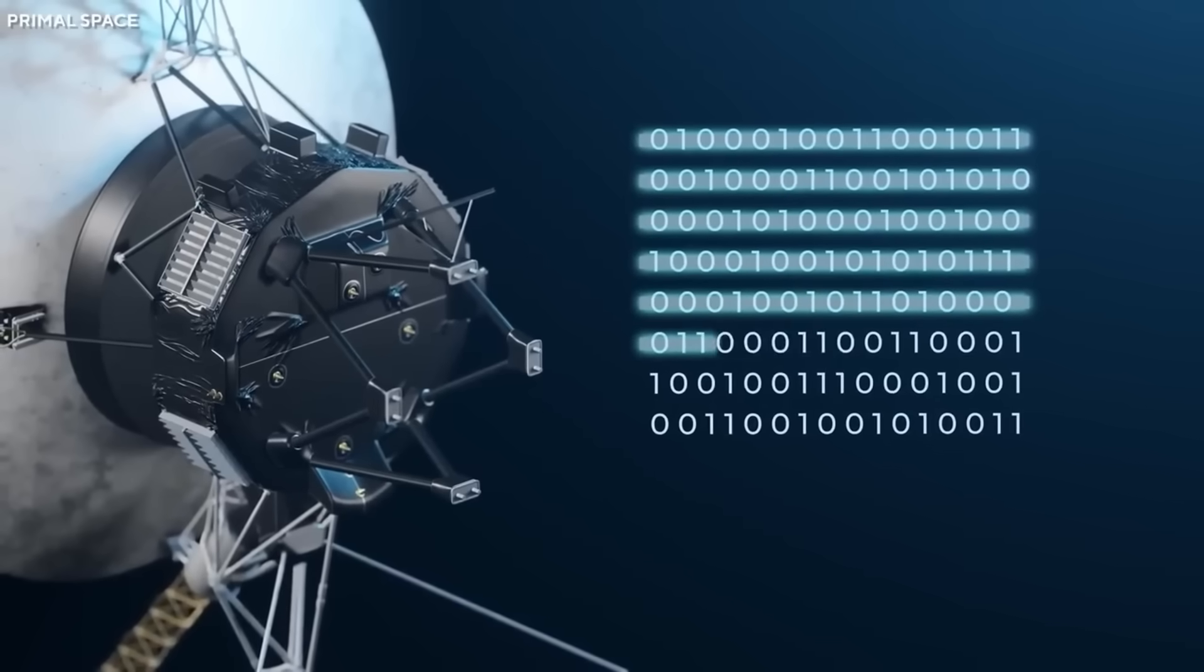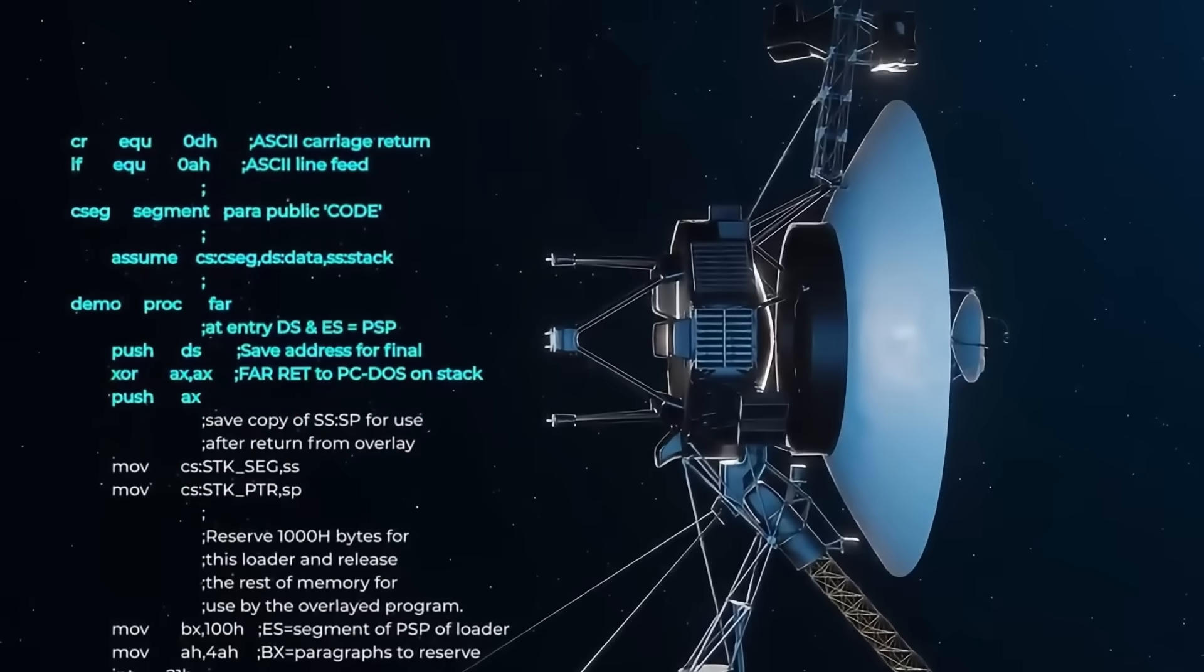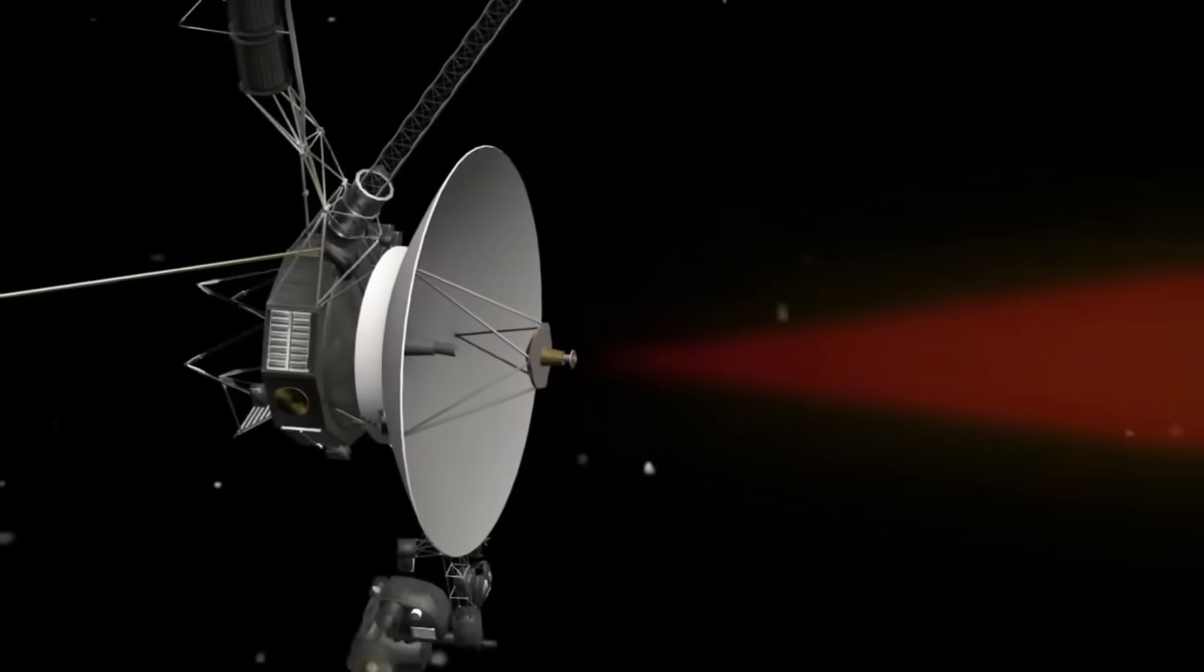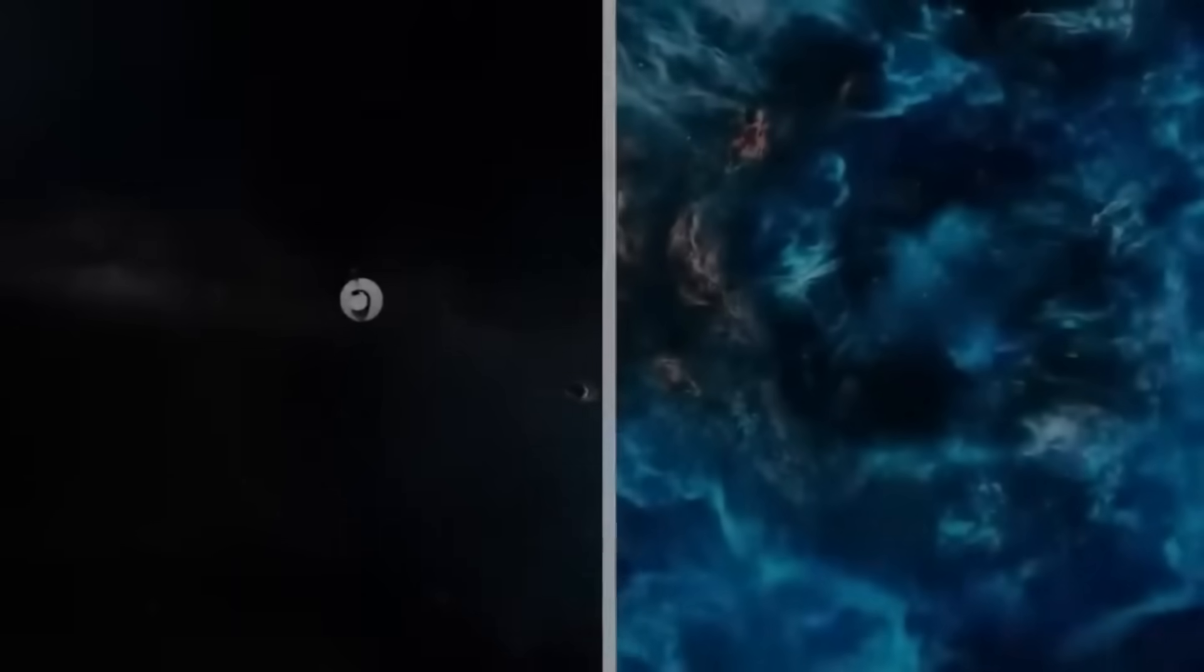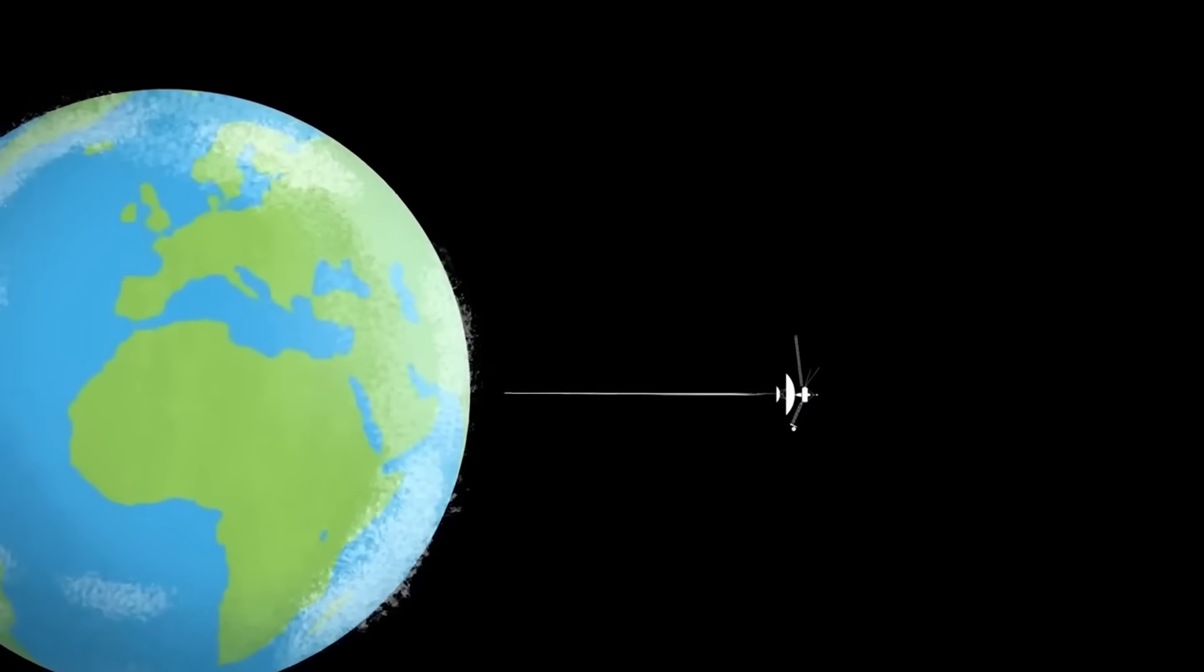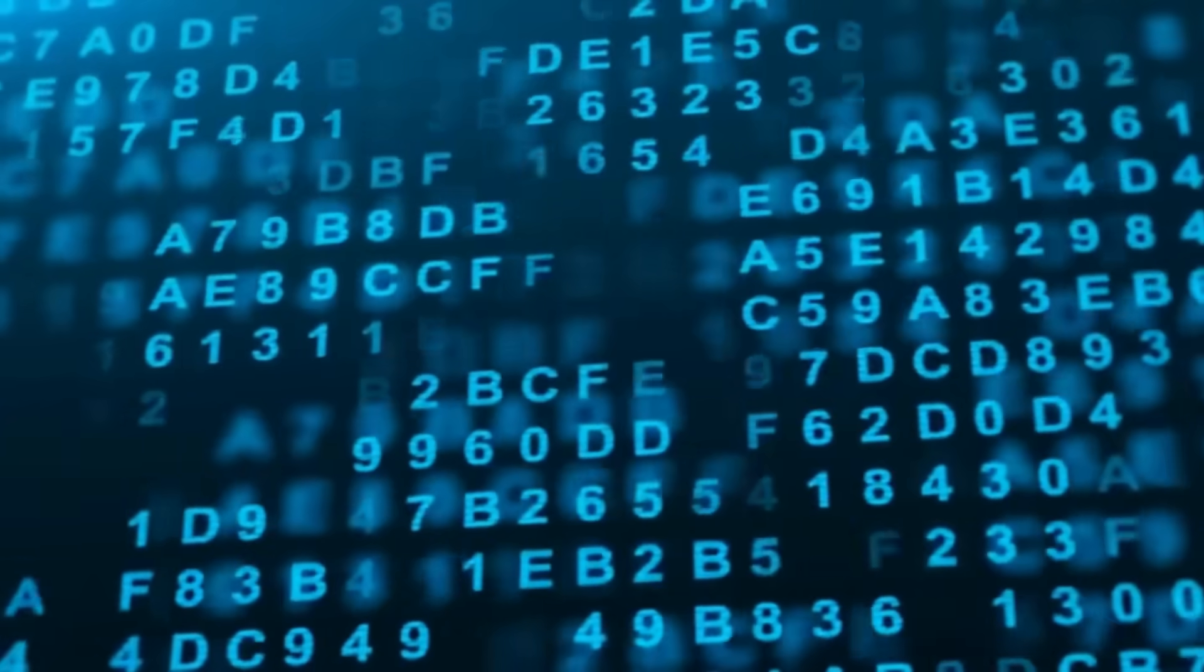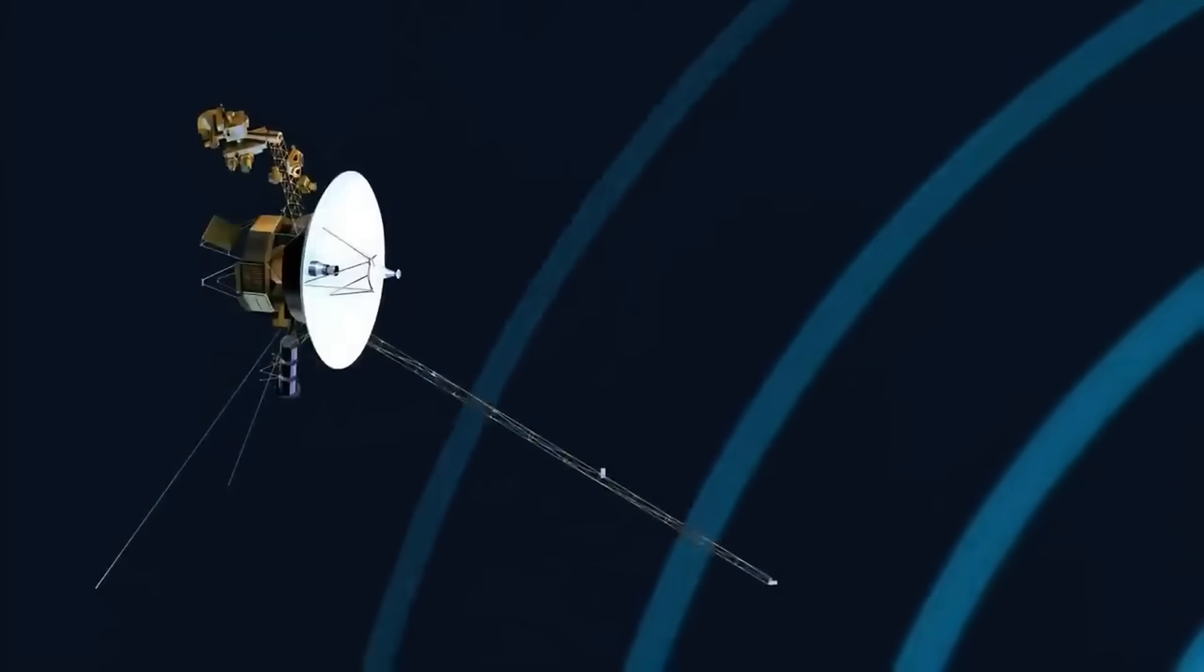This discovery opens a door to something much bigger. It's not just about Voyager anymore. If quantum chips can find hidden patterns in Voyager, what happens when we run them on James Webb's faint galaxy signals? On SETI's decades of radio archives? On LIGO's gravitational wave background? We're entering an era where the line between signal and noise blurs. Old data suddenly contains new secrets. It's like upgrading from a magnifying glass to the Hubble telescope, on the same data we thought we already understood. The universe hasn't changed, but our ability to see it has.